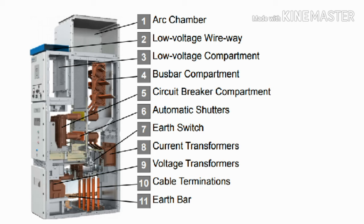Sixth is the automatic shutter, which is placed at the circuit breaker terminal connections. Whenever we insert the circuit breaker, the automatic shutter will open and close. Seventh is the earth switch. The earth switch helps so that whenever we isolate the circuit breaker from the switchgear, the earth switch closes and it prevents the auto false closing of the circuit breaker.